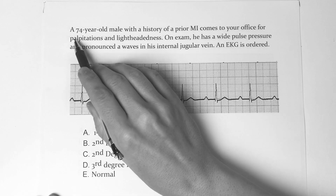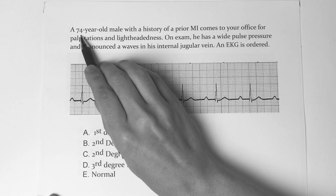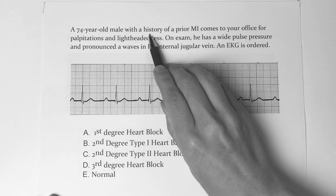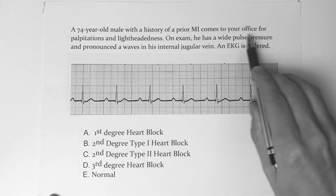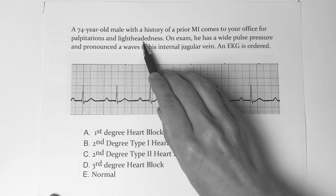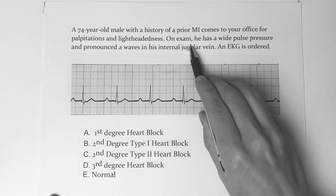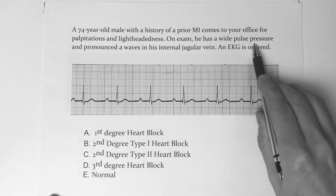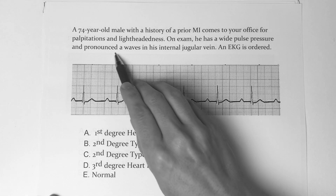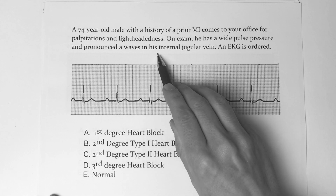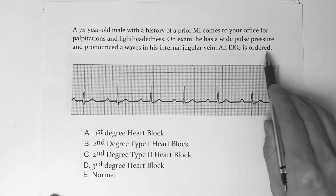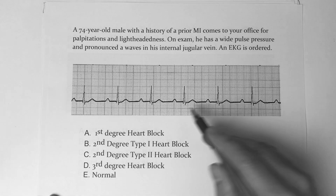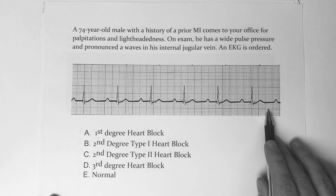A 74-year-old male with a history of prior MI comes to your office for palpitations and lightheadedness. On exam, he has wide pulse pressure and pronounced A-waves in his internal jugular vein. An EKG is ordered.